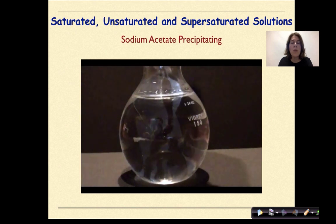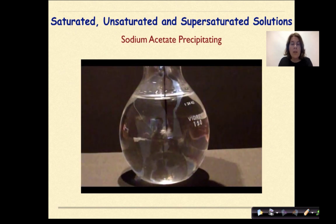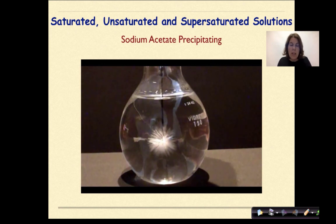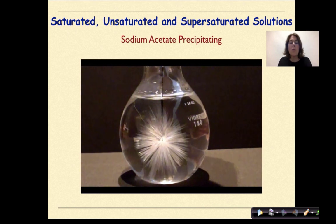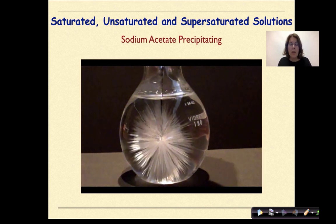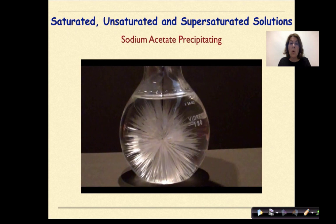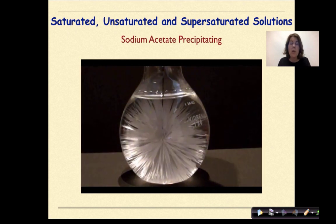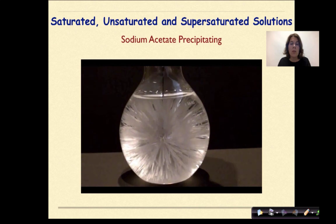So this is a supersaturated solution of sodium acetate. A rod is inserted into this supersaturated solution and just nudging it enough to cause precipitation. So we could see that over time, this whole flask, this whole round bottom flask here, is going to turn completely solid as this supersaturated solution solidifies.